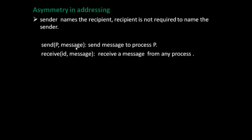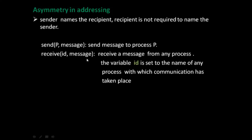Here there is asymmetry in addressing. In this receive primitive, id is a variable and it is set to the name of any process with which communication has taken place. In this tutorial we studied about direct communication in message passing systems. In the next tutorial we will study about indirect communication and how it takes place in a message passing system.